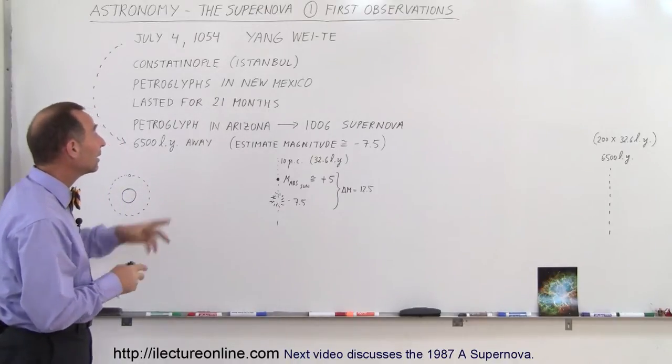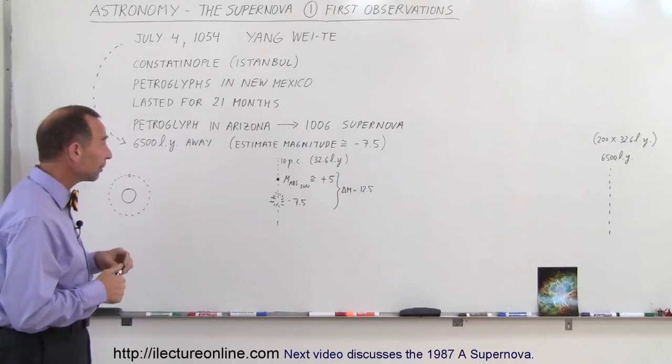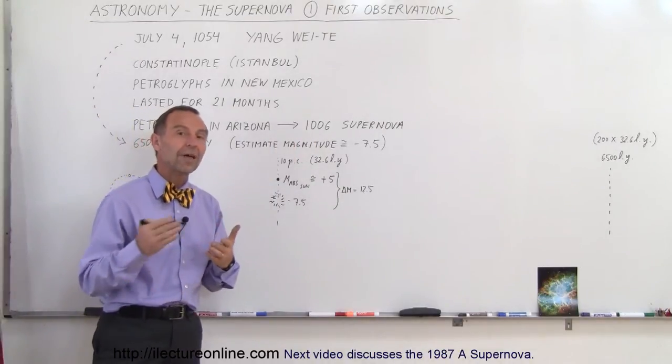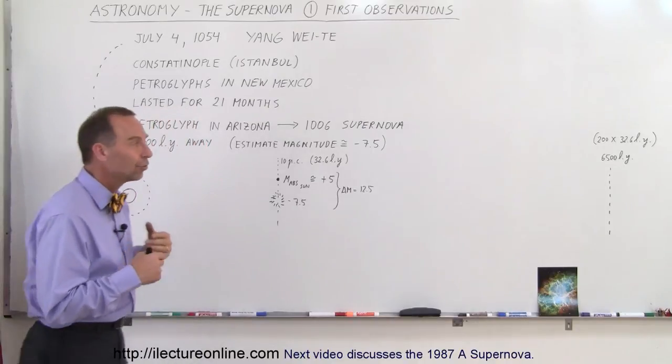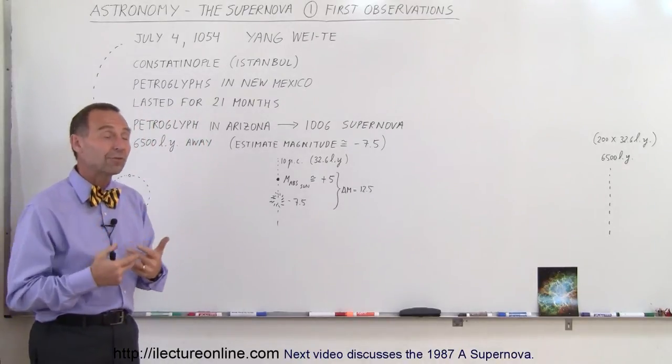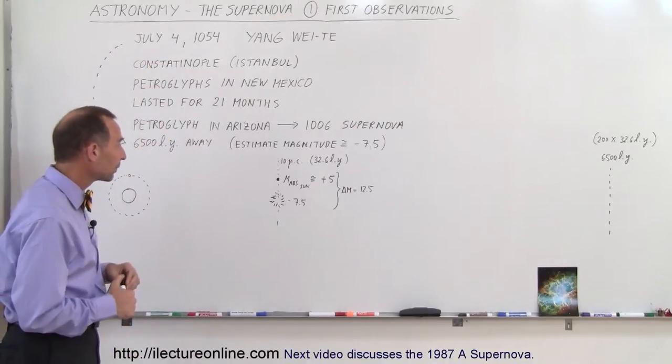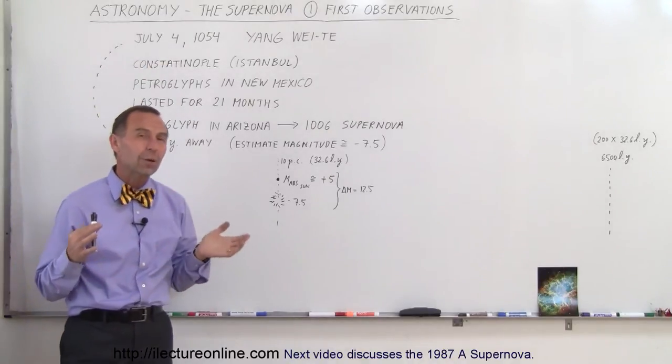Also what we have found in Arizona, we found a petroglyph that seemed to indicate that they saw another supernova, 1006 AD, and so that was also an event we've been able to trace back. But of course, the most famous one is the one that was seen on that particular morning. So let's get a feel for what that really is.